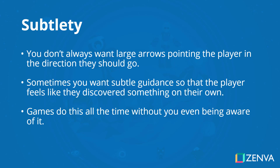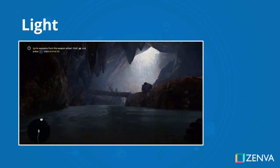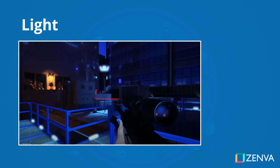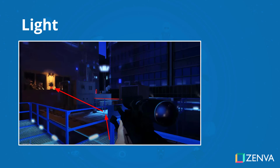So how can we do this in our own games? There are a number of different methods. First of all, there is light, and light is very powerful as it directly draws our attention. Looking at this image here, you straight away know which direction the player needs to go — they need to go towards that light as it is driving our attention. Looking at this other image, the objective for the player is to get to that door in the far corner where that light is, and with a complementary light in the center you can see the path the player needs to take. Light is a very powerful tool for highlighting where the player needs to go.